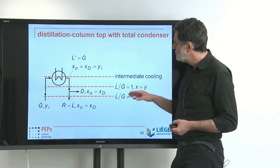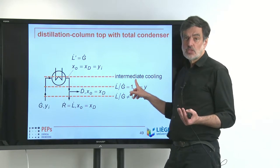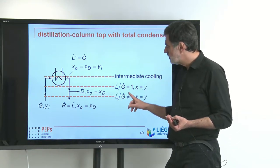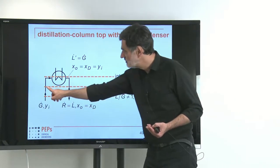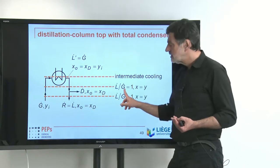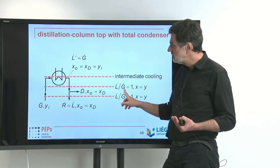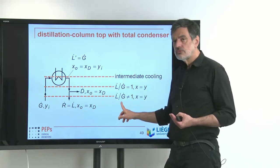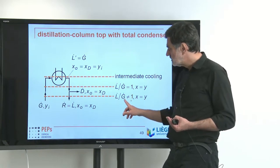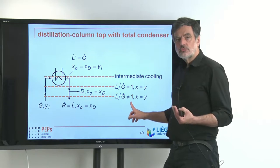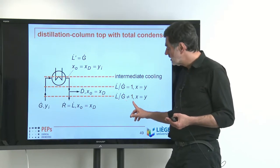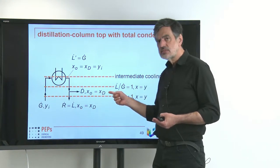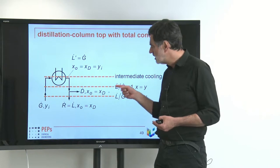If we look more carefully, we realize that we have intermediate cooling, which means operating lines have to meet on the diagonal. Above our distillate withdrawal, we have an L̇ over Ġ which is 1 — this flow rate is the same as that because nothing is removed in between, so it is exactly 1. Below that side withdrawal, we have a different flow rate ratio which is not equal to 1, corresponding to the internal flow rate ratio in our distillation column.